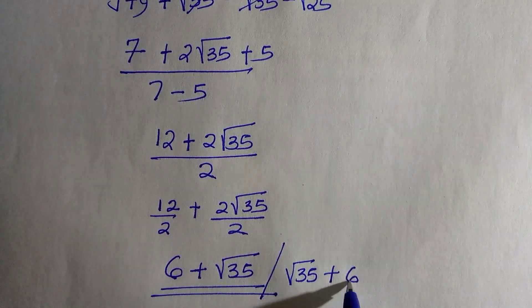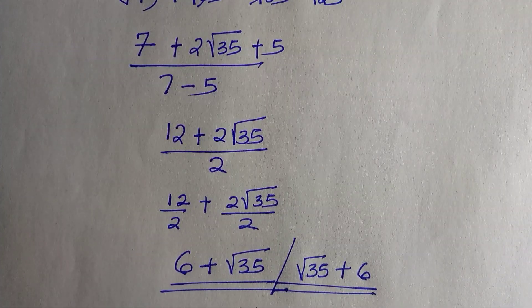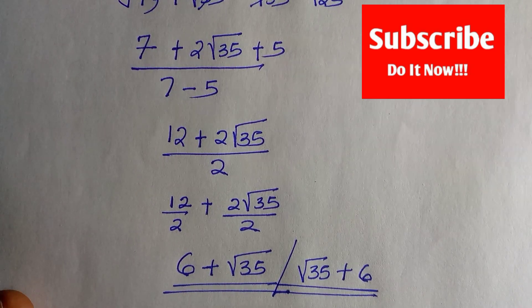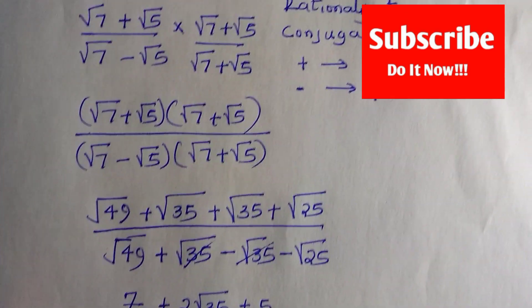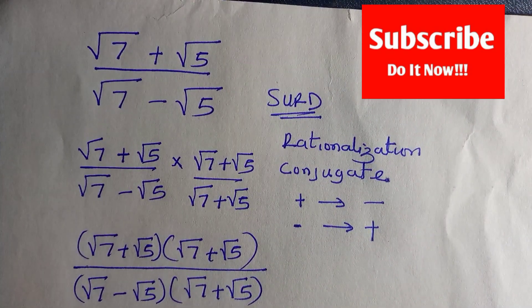You can also write it as √35 + 6 since they are commutative. Here is how to solve this. I hope you're enjoying this video. Don't forget to subscribe to this channel and never stop learning.